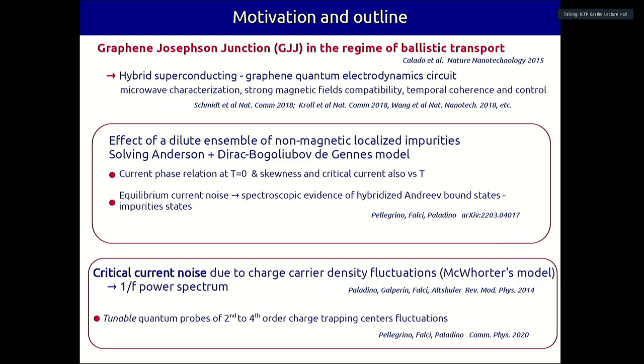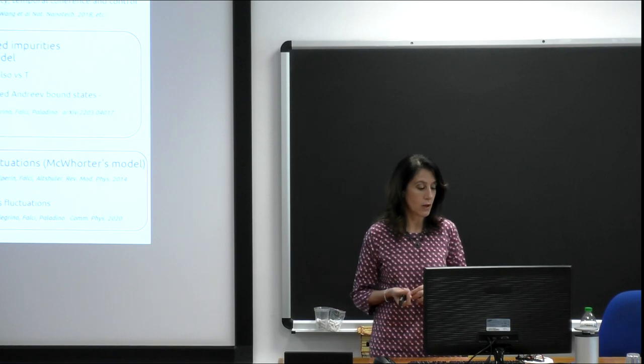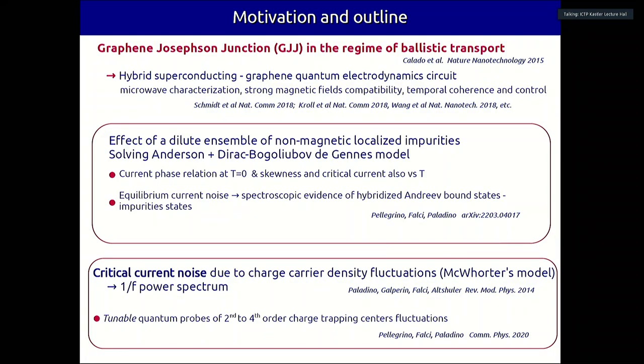This is a type of transport analysis. I will also show how the current noise spectrum may give a very precise spectroscopic characterization of these impurities. If time allows, I will also discuss another possible mechanism of current fluctuations in short ballistic graphene-Josephson junctions — critical current fluctuations due to a phenomenological model called the McWhorter model, which leads to 1/f noise, and we found it can give rise to 1/f noise in the critical current with peculiar features related to the statistics of the fluctuations.